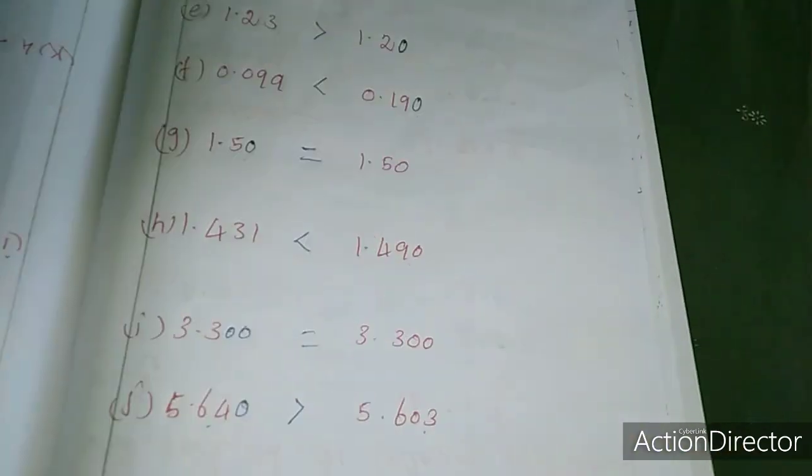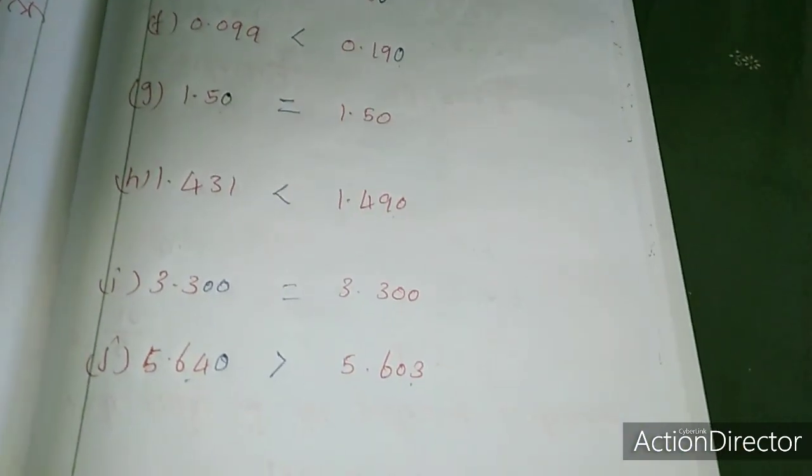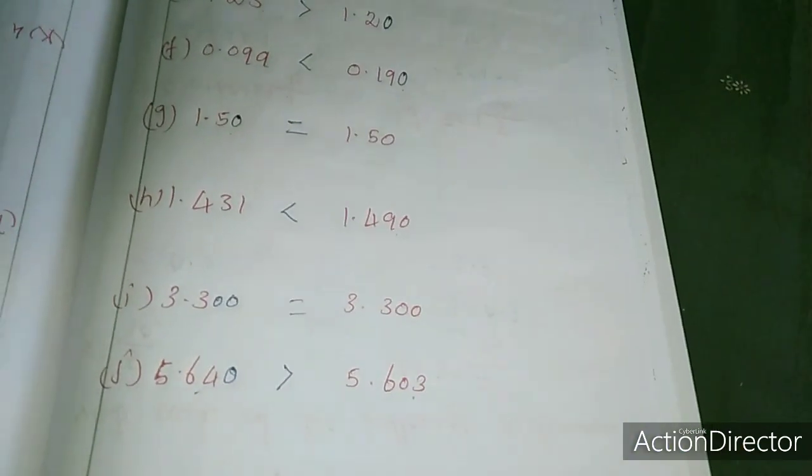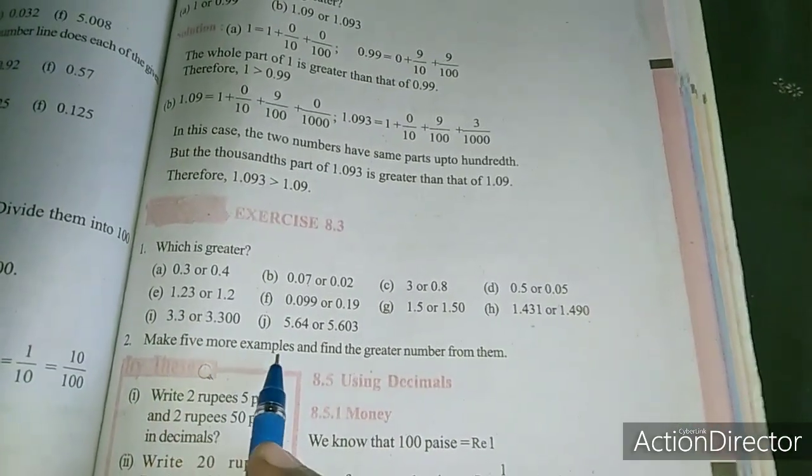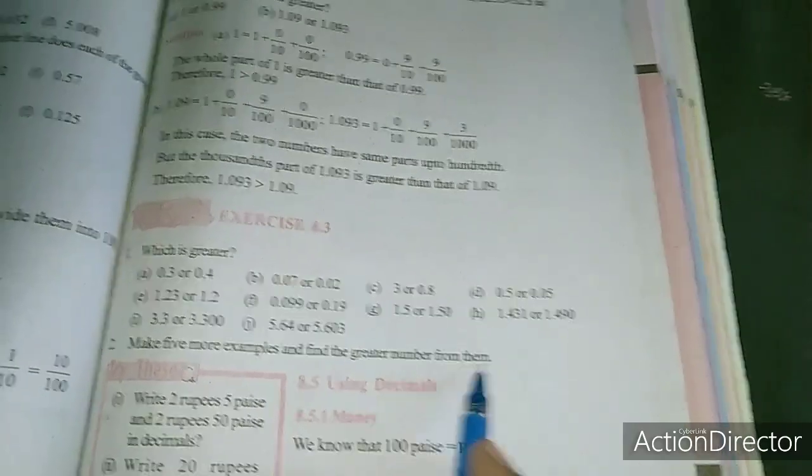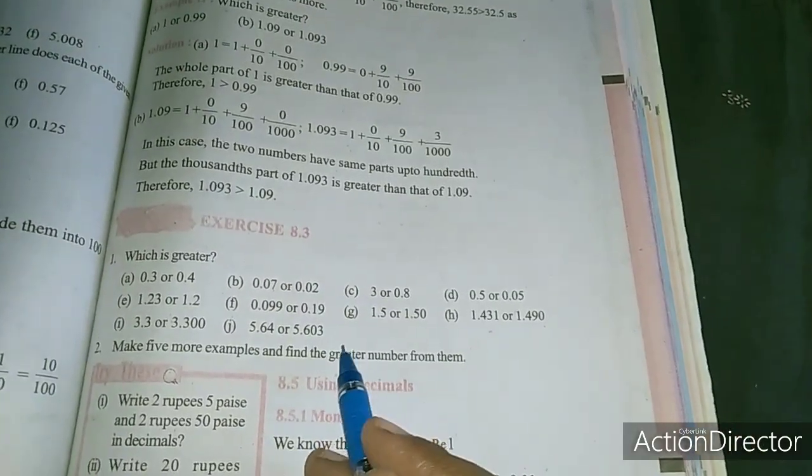First sum is completed. Now we will move to the second sum. Make 5 more examples and find the greater number from them. We want to make 5 more examples and find the greatest number.